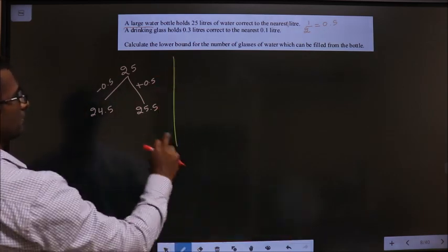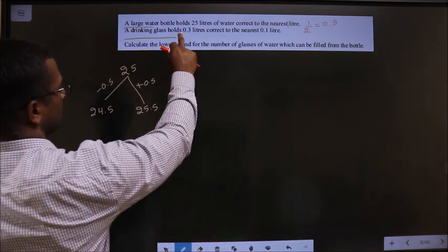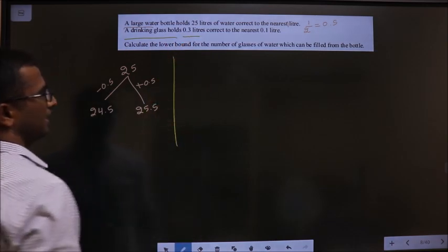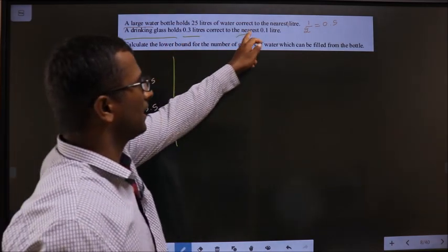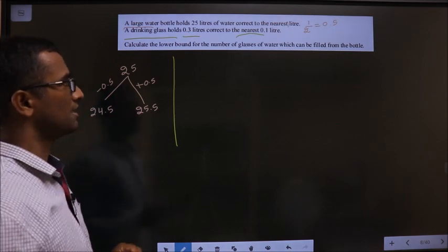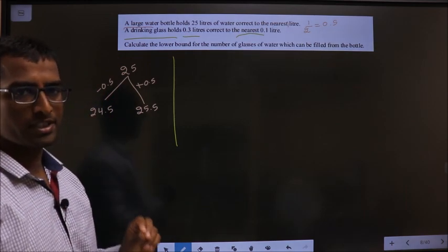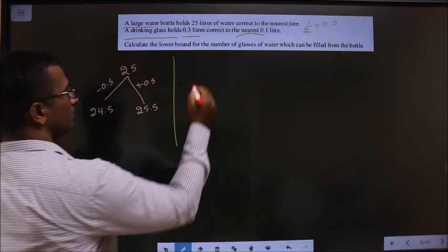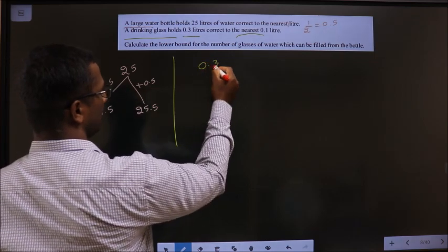Okay, next. A drinking glass holds 0.3 liters, correct to the nearest 0.1 liter. Let us write the upper and lower bounds for 0.3 liters.